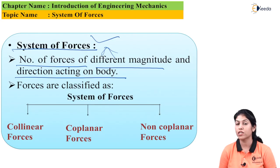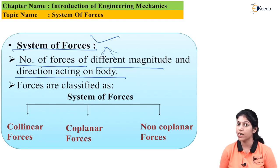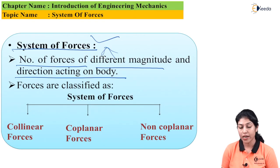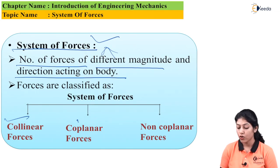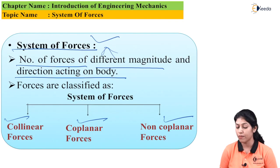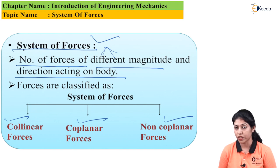System of forces is related to forces, so on that basis we can define different types. We can categorize the system of forces into three types: one is collinear forces, second is coplanar forces, and third is non-coplanar forces. I will discuss about these three types one by one.